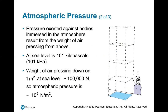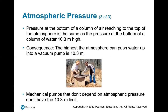Pressure exerted against bodies immersed in the atmosphere results from the weight of air pressing from above. At sea level it's 101 kilopascals, or 101,000 pascals. The weight of air pressing down on one square meter at sea level is about 100,000 newtons, so atmospheric pressure is 10 to the fifth newtons per square meter.